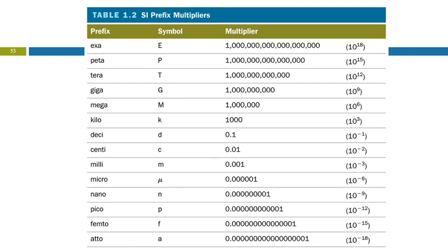We use these prefixes in everyday life — megabytes, megabucks, gigabyte hard drives. Giga means 10 to the 9th, so a gigabyte is 10 to the 9th bytes. Now they have terabytes — 10 to the 12th. That's a lot of bytes. Nano is also on the memorization list.